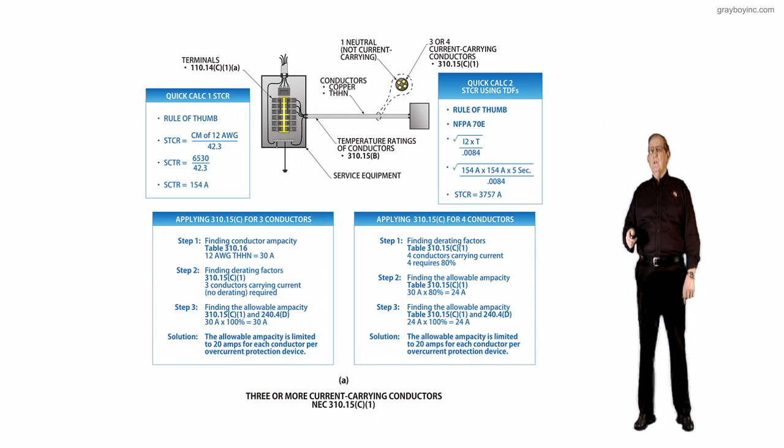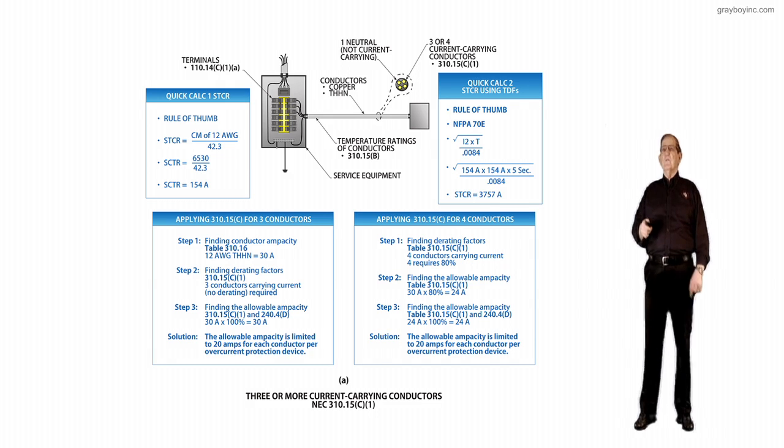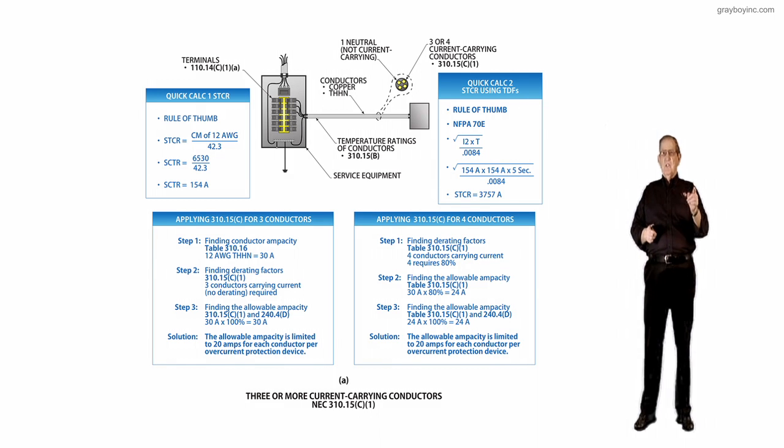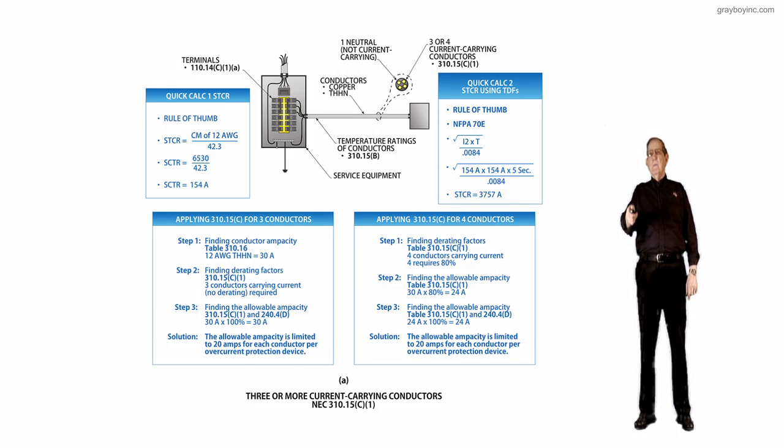So you could use a number 12 wire, 20-amp overcurrent device, and you're still in business there, even though you have 4 current carrying conductors. That's what these two calculations are designed to point out to you. That you can use the 90-degree ampacity to de-rate back to a 60, and that's what we've done right here in method 2. Keep that in mind that you cannot use the 90-degree ampacity except to de-rate back to a usable 60 or 75 based upon how the equipment is marked.